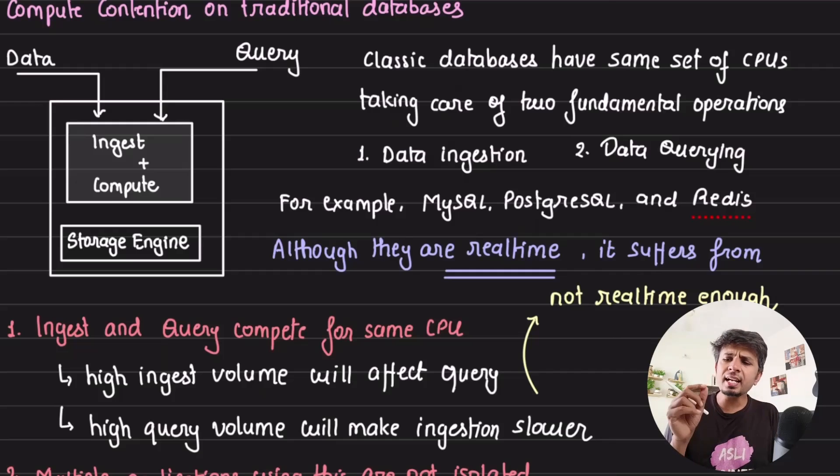Problem number two is that, if you have multiple applications querying the data from the same database. Now they are all, because they are all querying on the same database, the problem with this is, there is no isolation. Which means, workload from one of the applications will affect the workload of others. So, these are the two critical problems with this, and a real-time database like Rockset cannot possibly bear with this, because they have to offer low latency for all kinds of ingestion and compute.